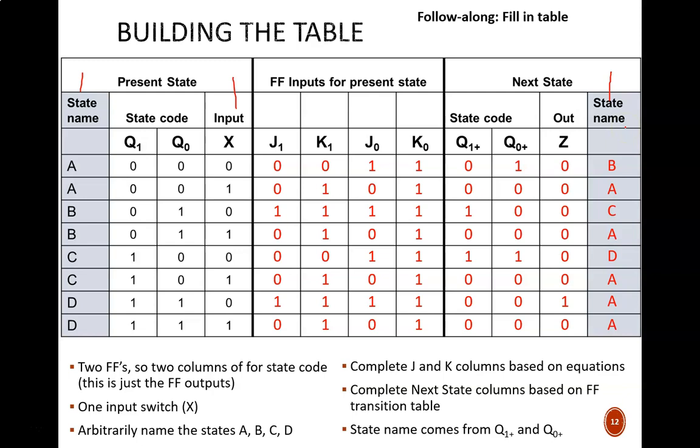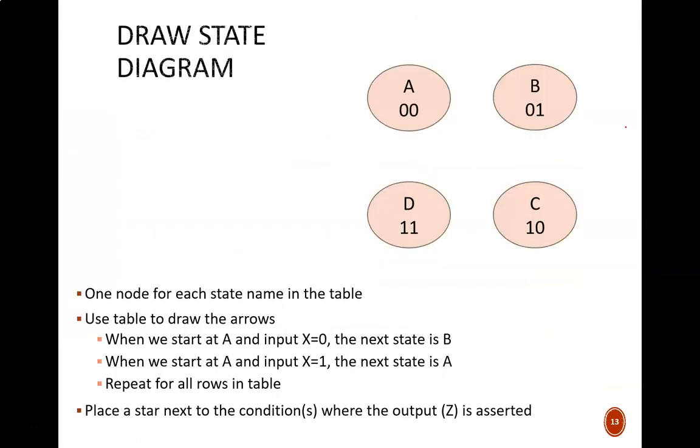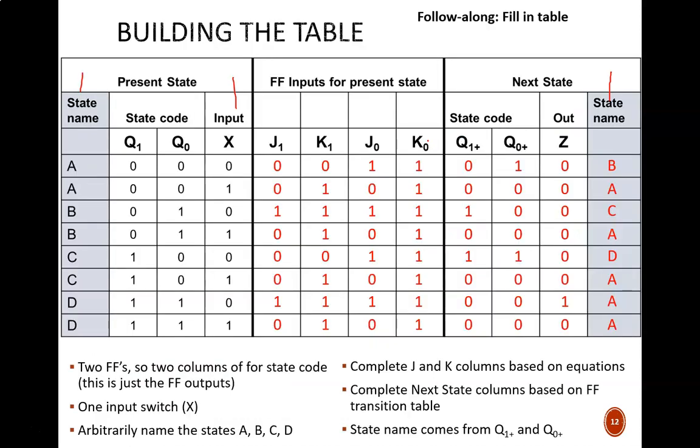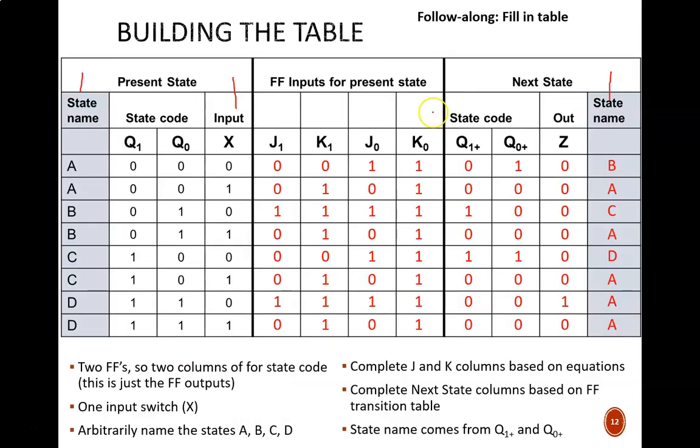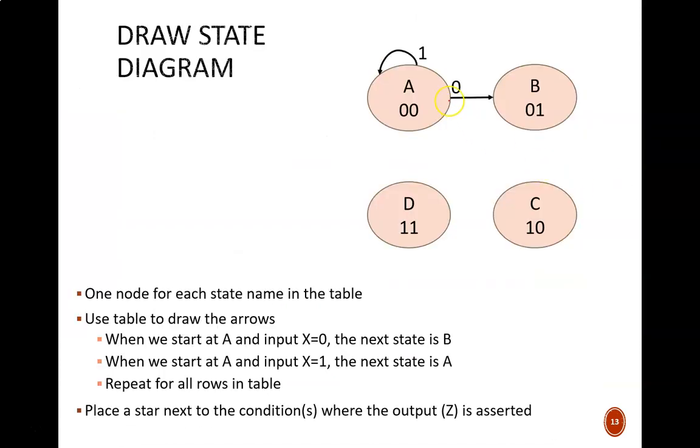Begin this step by drawing one node for each state name. Notice how in each node I include the state name and the 2-bit code. Then, we'll use the table to draw arrows between the nodes. If the circuit is at state A and the input is 0, it moves to state B. So, we draw an arrow going from A to B with an input 0 written next to it. Similarly, if the circuit is at state A and the input is 1, it remains at state A. So, we draw an arrow looping from A back to itself with a 1 next to it. Complete this state diagram yourself. Resume the video when you're done.